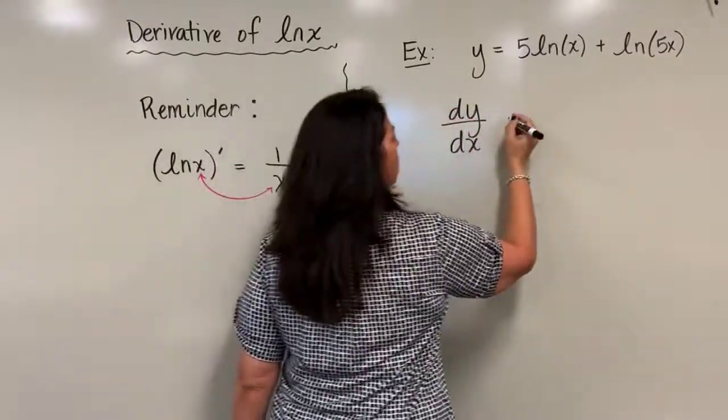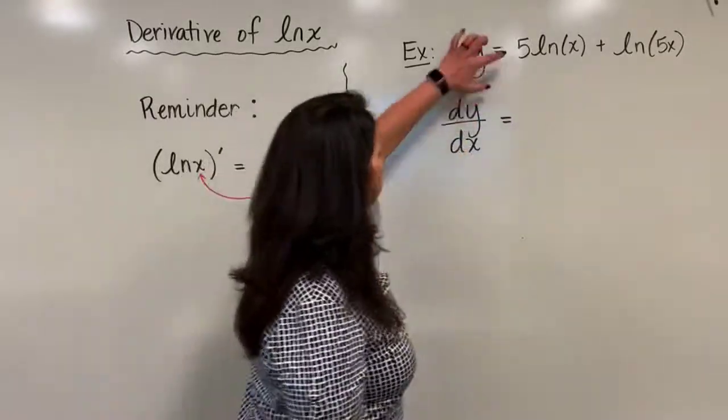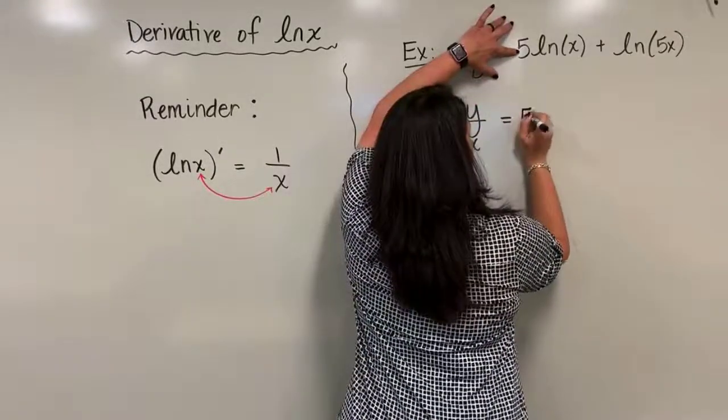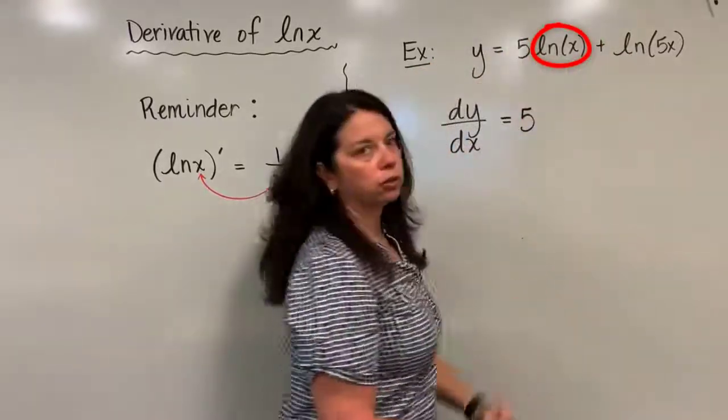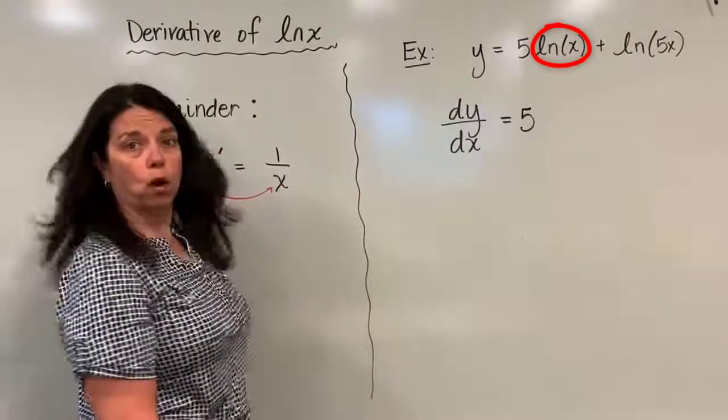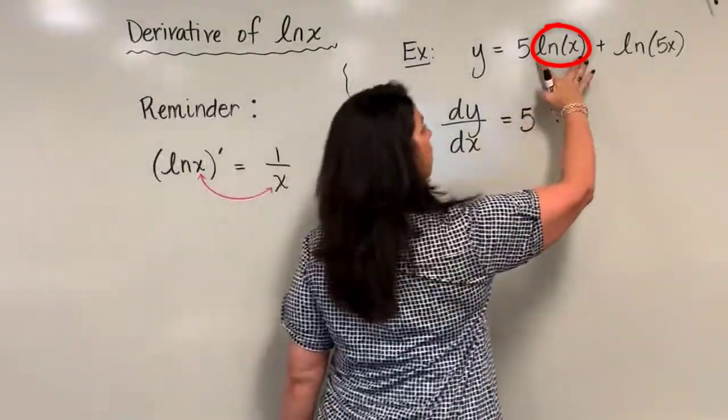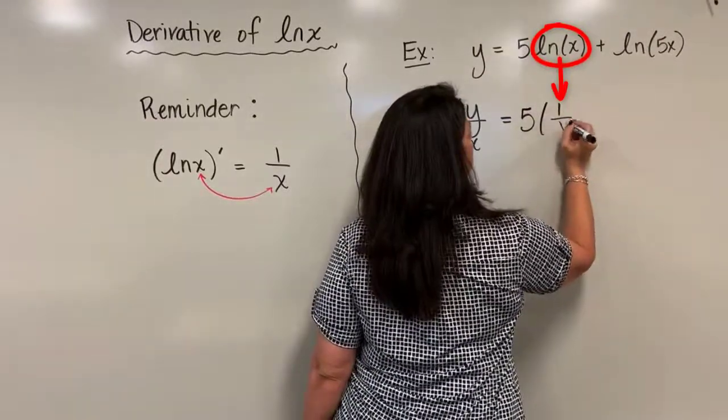So let's see. We're going to have here equal to: bring down my constant multiple of 5. Now I have this part, natural log x. Well, we already know the derivative of natural log x is just straight up 1 over x. So I'm trying to find the derivative of natural log x; that piece is simply 1 over x.